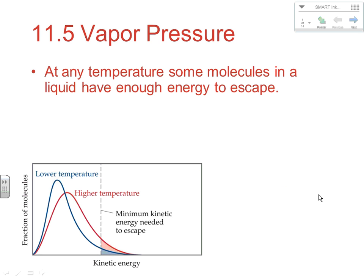Welcome to AP Chemistry at Hononega High School. I'm Brian Brown, and today we'll be looking at the next two sections, Chapter 11, sections 11.5 and 11.6. Section 11.5 gets into vapor pressure, which is another idea closely related to intermolecular forces, just like everything has been in this chapter.